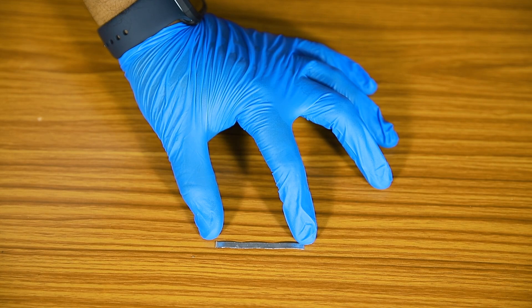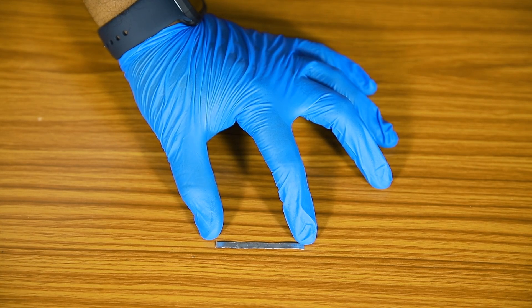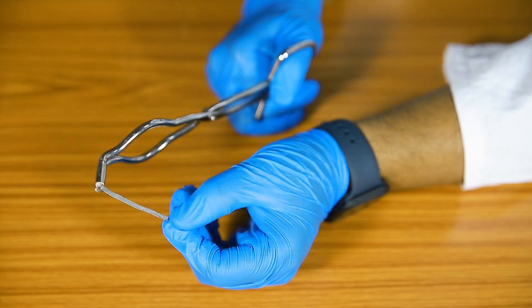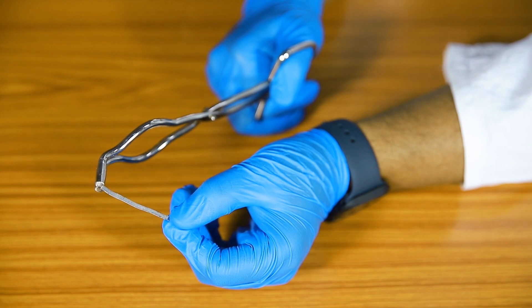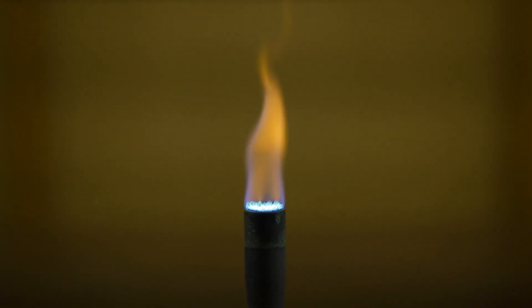Take about 5 centimeters of magnesium ribbon and hold it with the help of a pair of tongs. Bring the free end of the magnesium ribbon near the flame of the spirit lamp and let it burn.